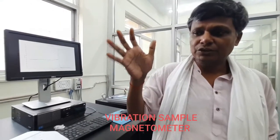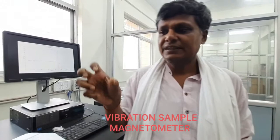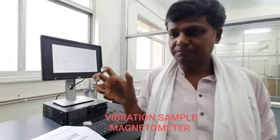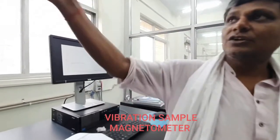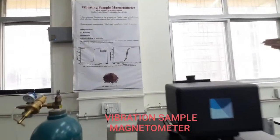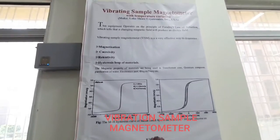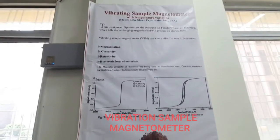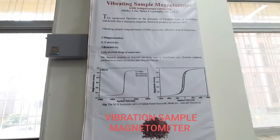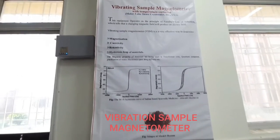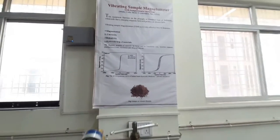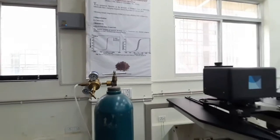This way this equipment is very useful to measure the magnetic measurements of the samples. The poster is also visible. These are the magnesium ferrite oxides where you can determine the magnetization, coercivity, remanence, and other related things also.